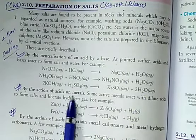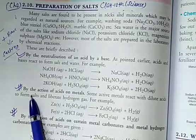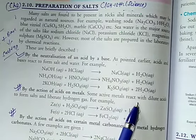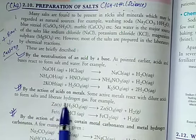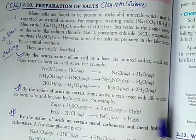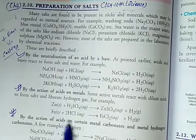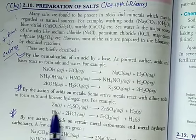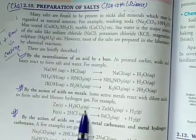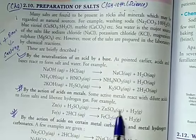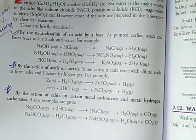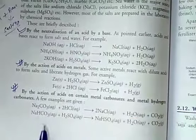Salts can also be prepared by the action of acids on metals. Some reactive metals react with dilute acid to form a salt and liberate hydrogen gas. For example, zinc is a reactive metal — it reacts with sulphuric acid (H₂SO₄) to produce zinc sulphate plus hydrogen gas.